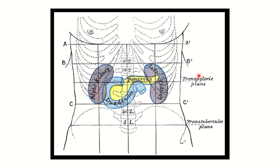Here we can see the transpyloric plane and it passes at this level. The transpyloric plane corresponds with the lumbar vertebra 1 (L1) level. We can see thoracic 12 vertebra, and just below that is lumbar 1, and at this line there are different structures.